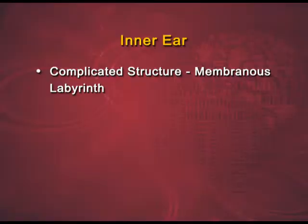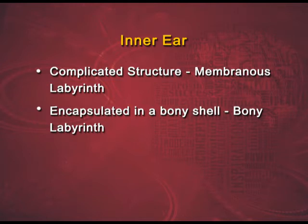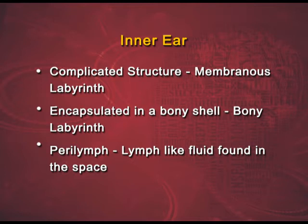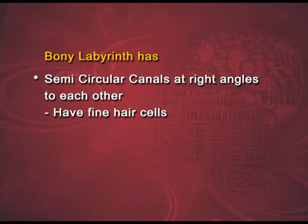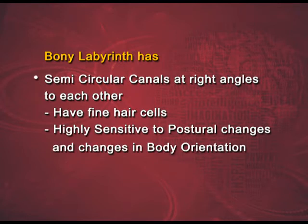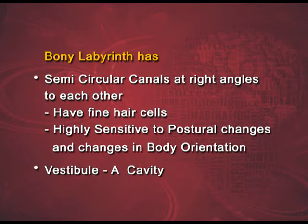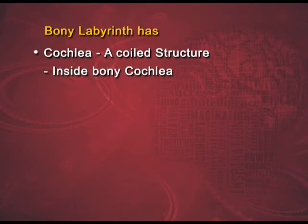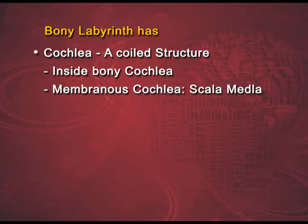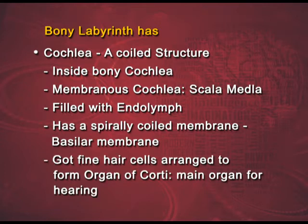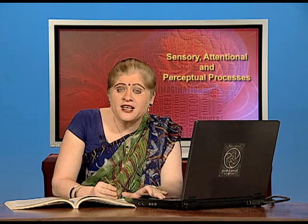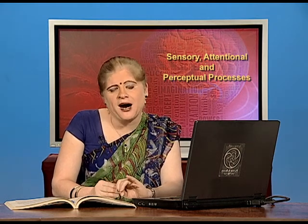Then you have the inner ear, which is a very complicated structure known as the membranous labyrinth. It is encapsulated in a bony shell called the bony labyrinth, which has a life-like fluid found in the space. The bony labyrinth has semi-circular canals at right angles to each other, which have fine hair cells and are highly sensitive to postural changes and changes in body orientation. It has a vestibule, which is a cavity, and a cochlea, which is a coiled structure. Inside the bony cochlea there is a membranous cochlea known as scala media, filled with endolymph. It has a specially coiled basilar membrane. The fine hearing cells are arranged to form the organ of Corti, which is the main organ of hearing, located in the innermost parts of the inner ear.